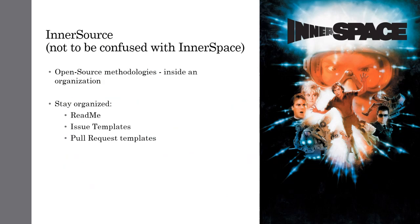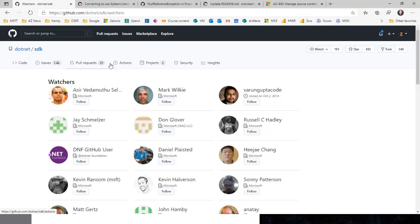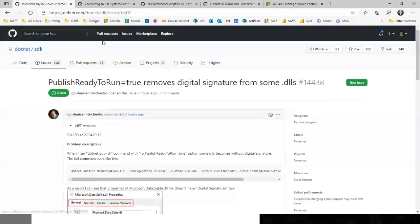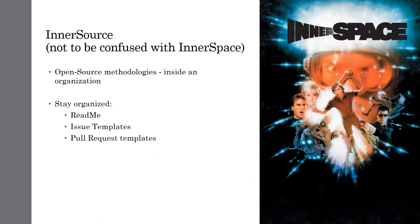Some of the key elements for InnerSource — and this is true for any open source project too — include the README file: what is this repository for, what is this code supposed to do, why does it exist? We also didn't talk about issues templates and pull request templates. You have the ability to create templates within GitHub: when someone creates a new issue, these are the things I want people to fill out. It gives guidance on how you might want to report issues and makes sure you have all the information you need.